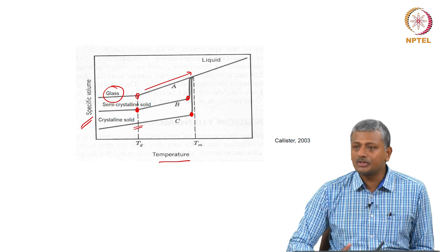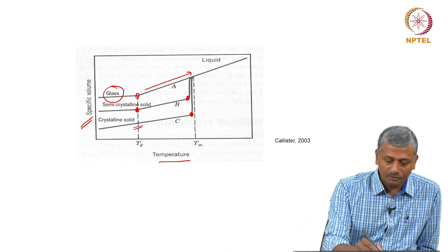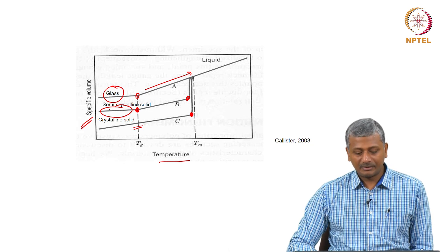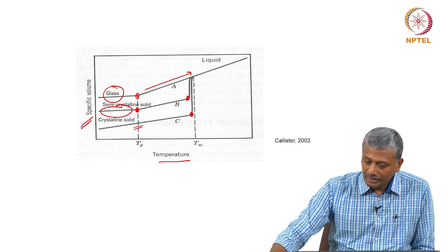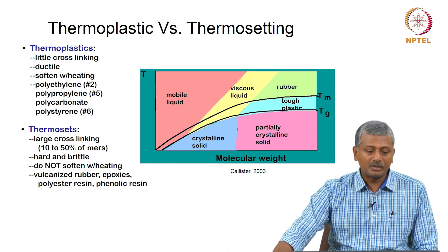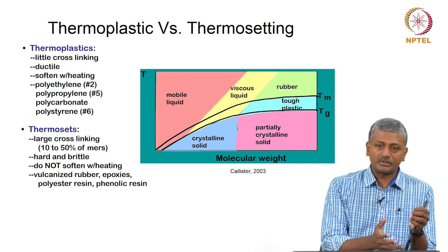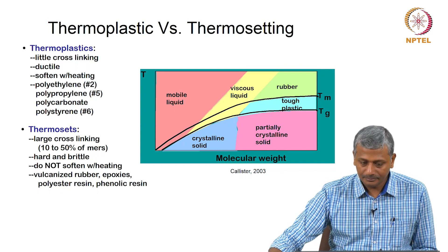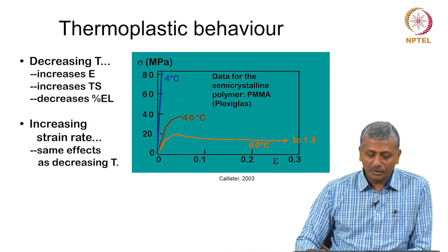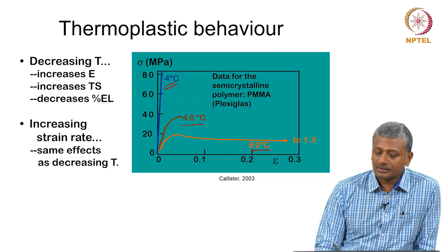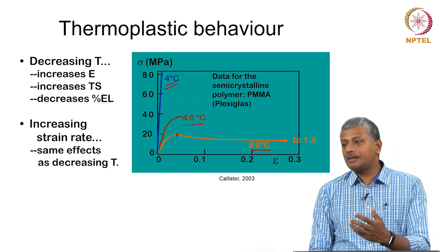We need to understand this because we need to define the range of working with these materials. For a semi-crystalline material, for a well-defined mechanical characteristic, you would like to be in the region lower than the glass transition temperature — otherwise the material will start becoming too viscoelastic. Thermosetting polymers are essentially your cross-linked and reticulated polymers, whereas thermoplastic means linear and branched structures which are easily able to move when temperature increases. For thermoplastic materials, there is a major drop in ultimate stress levels when temperature increases — they are extremely dependent on temperature.